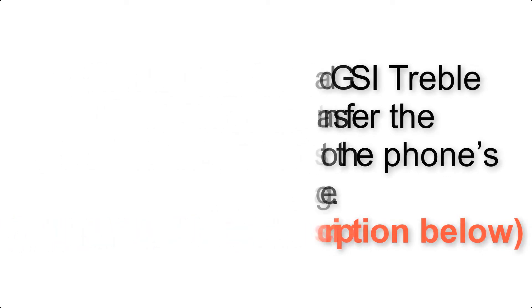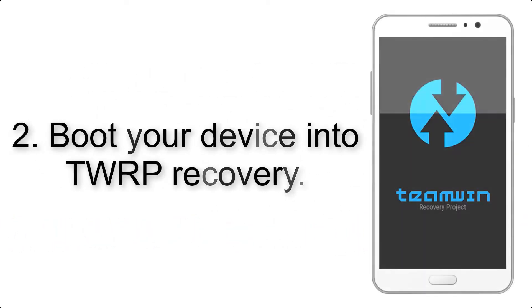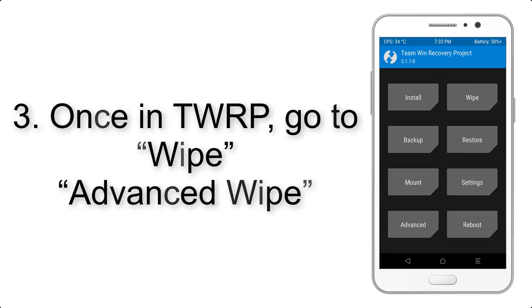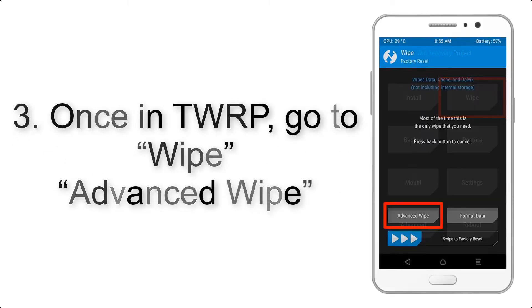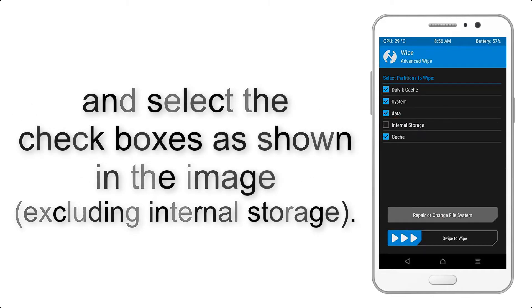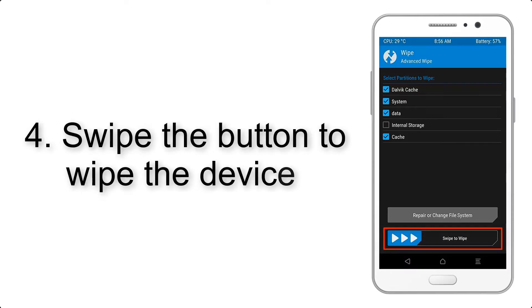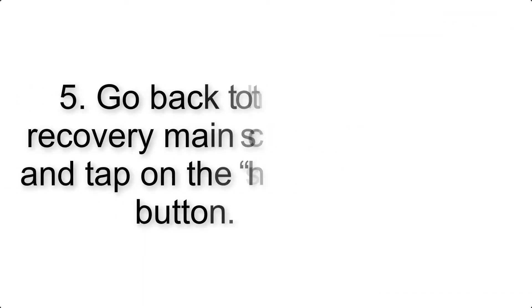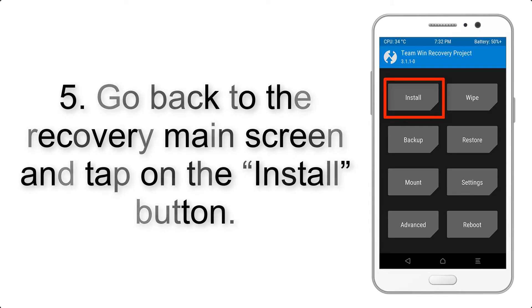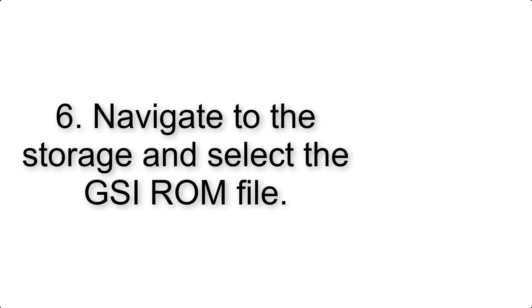Step 2: Boot your device into TWRP recovery. Once in TWRP, click on Wipe, then Advanced Wipe, and select the checkboxes as shown in the image, excluding internal storage. Step 4: Swipe the button to wipe the device.